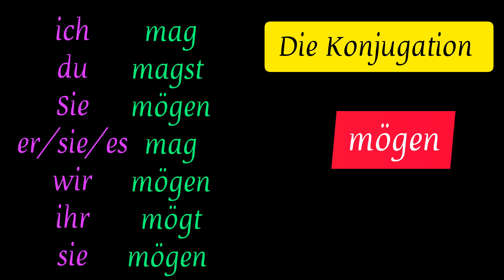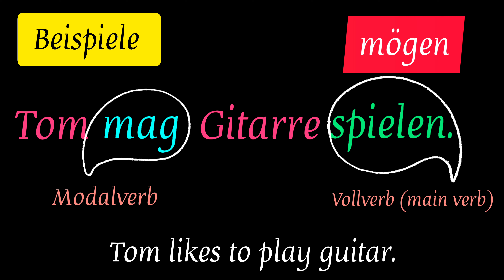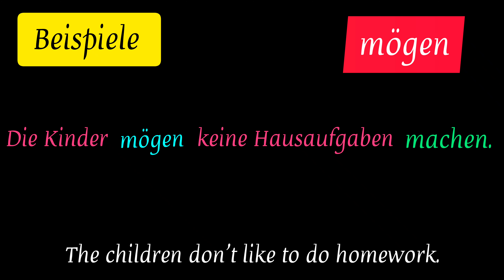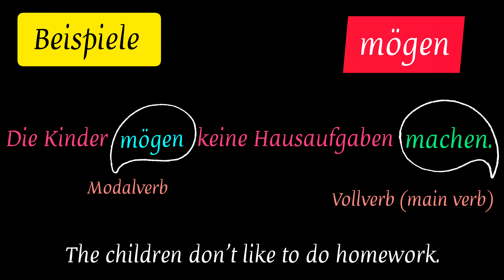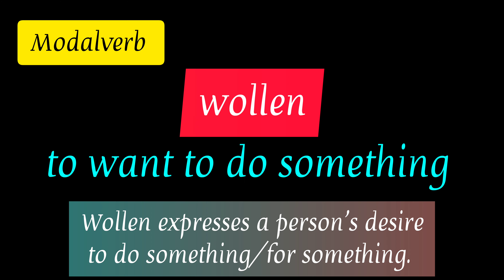The next verb is mögen, which means 'to like something.' Conjugation: ich mag, du magst, Sie mögen, er/sie/es mag, wir mögen, ihr mögt, Sie mögen. Examples: 'Tom mag Gitarre spielen' and 'Die Kinder mögen keine Hausaufgaben machen.'